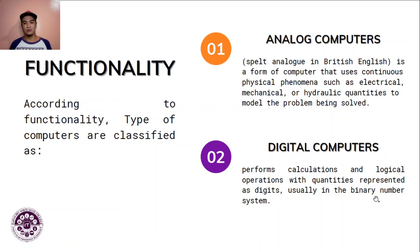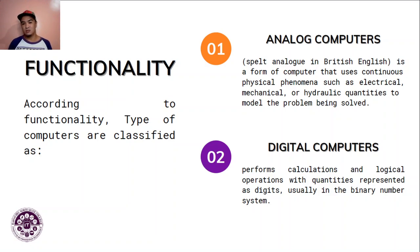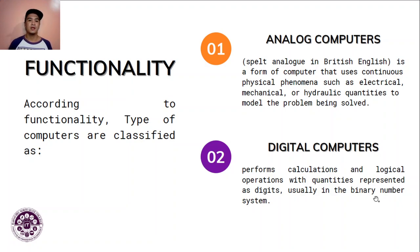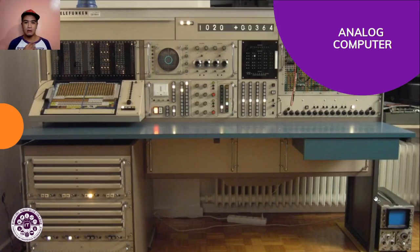Digital computers perform calculations and logical operations with quantities represented as digits, usually in the binary number system — just as described earlier. Very good examples include your mobile phone, tablet, or laptop.